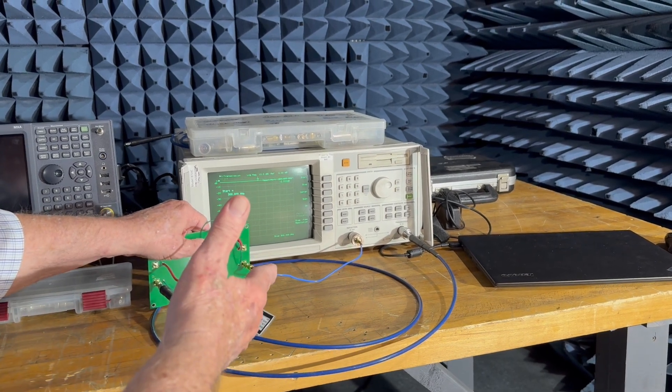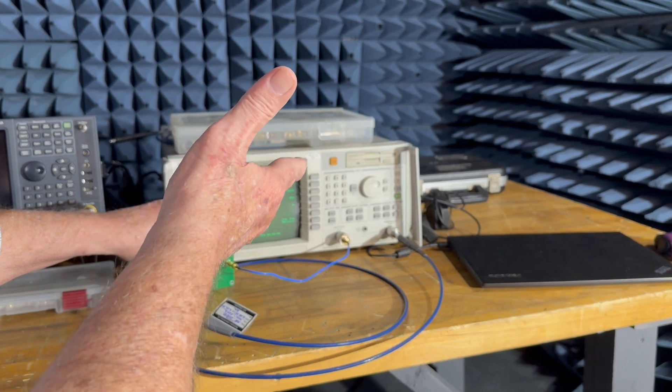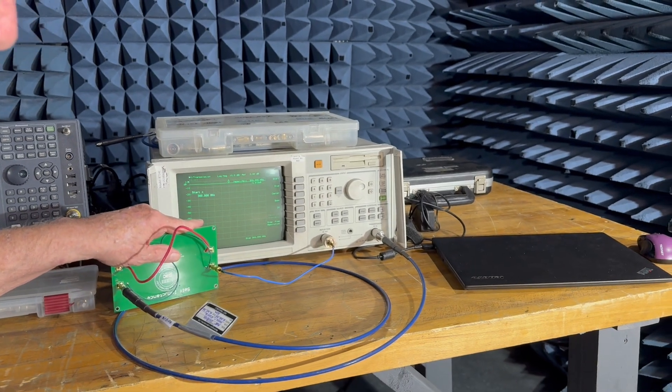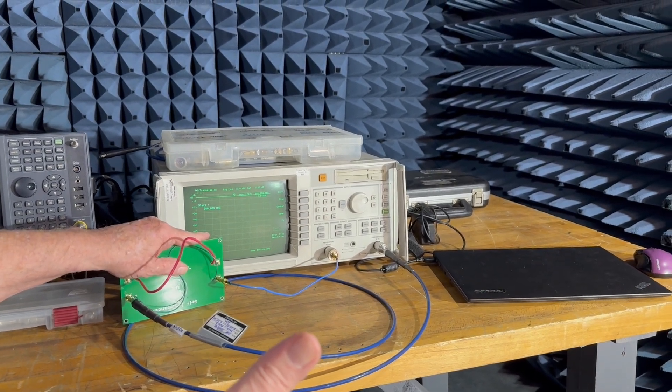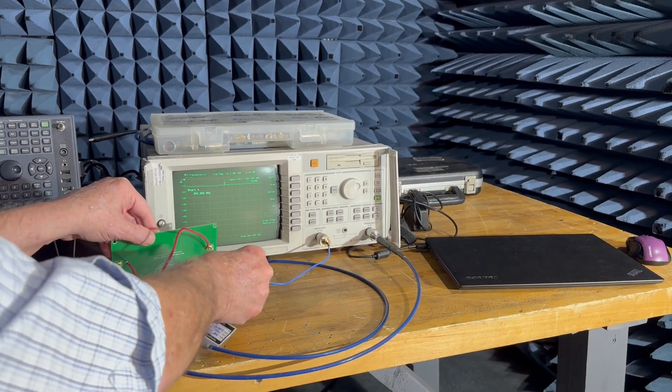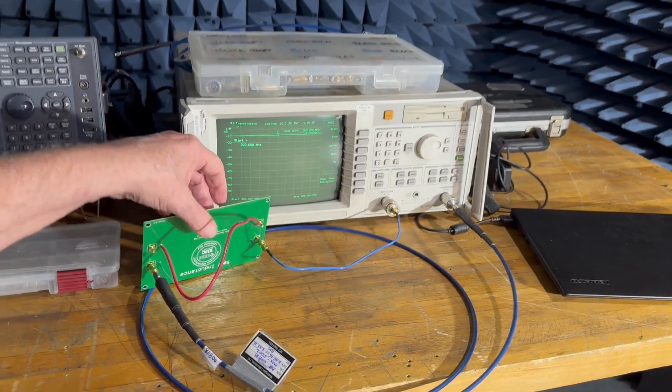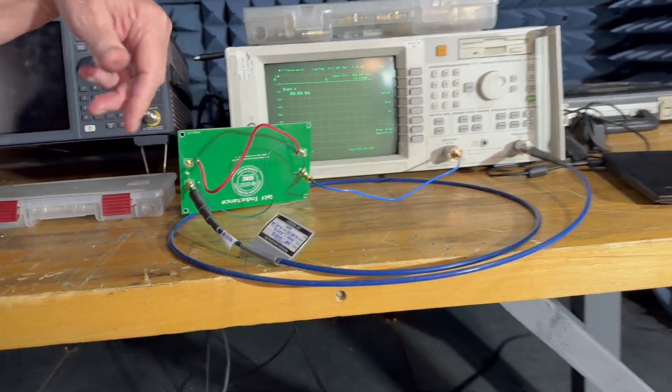You can see that the signal level went up by about five to six dB just from changing the position of the wire from a big loop to a small loop, because the return current has to come through the ground plane.